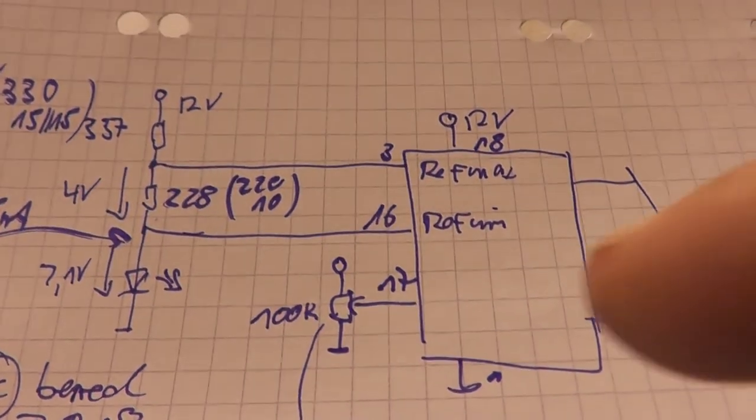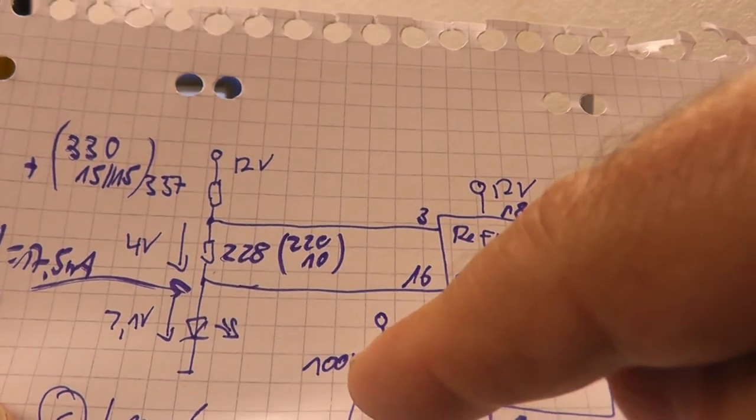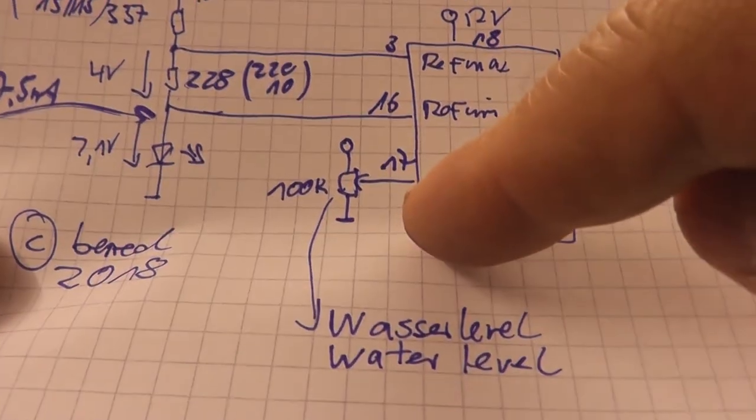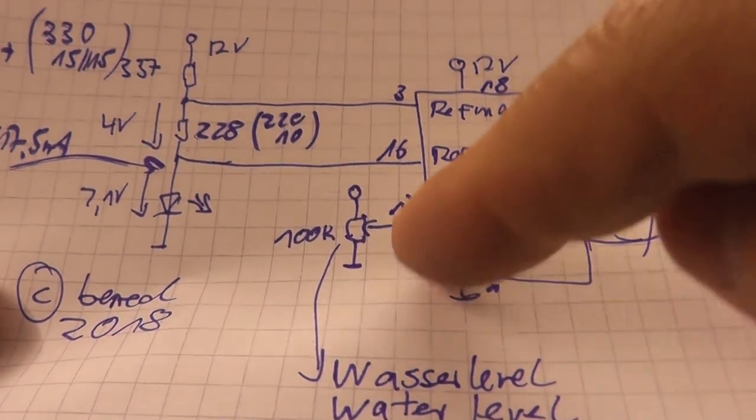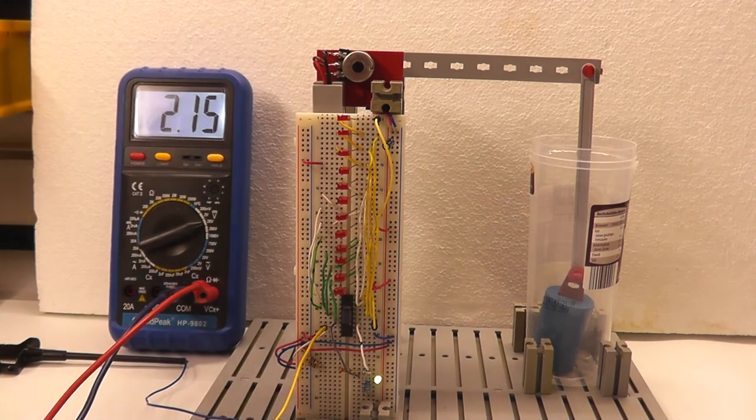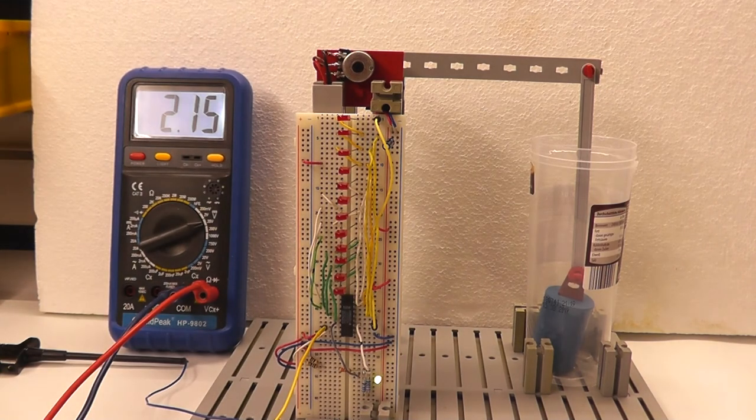Here in the circuit diagram you can see the trim pot or potentiometer is connected to pin 17 as a voltage divider. What I do now is I measure the voltage at pin 17, and you can see on the left side I am at 2.15 volts. That's exactly what the minimum reference is.